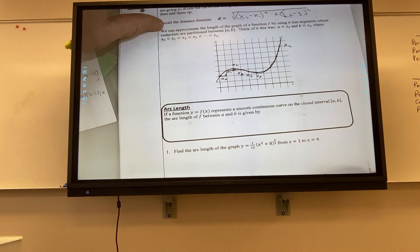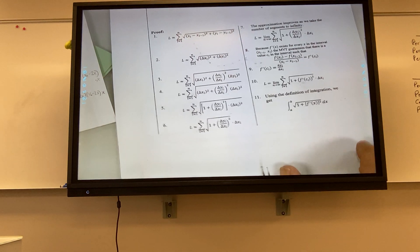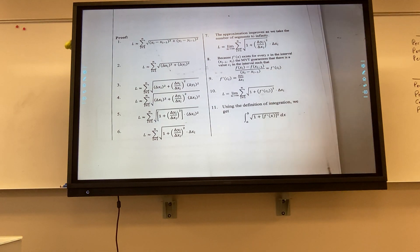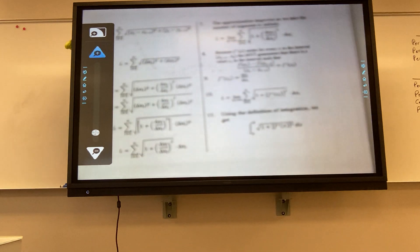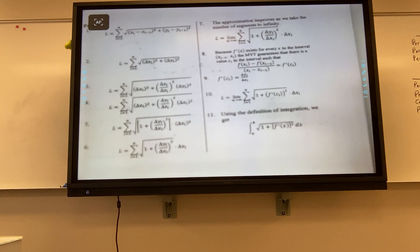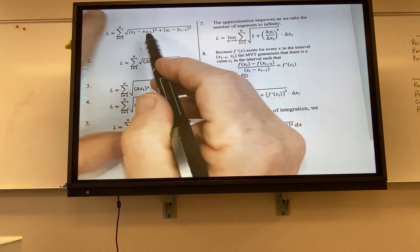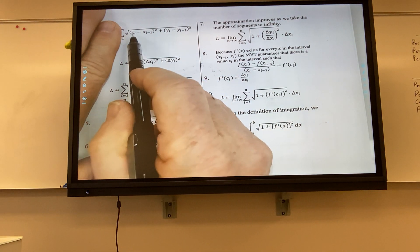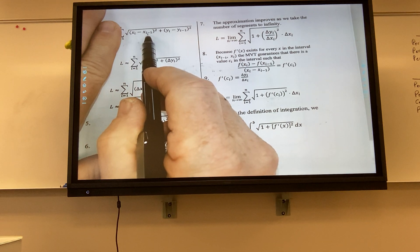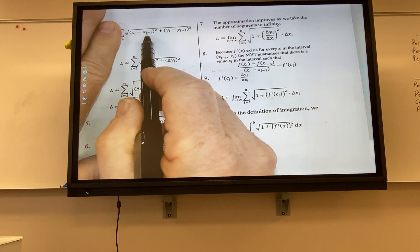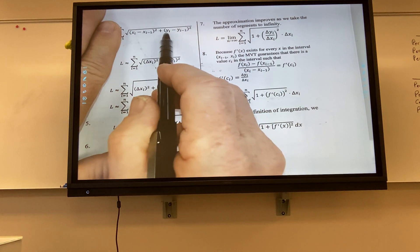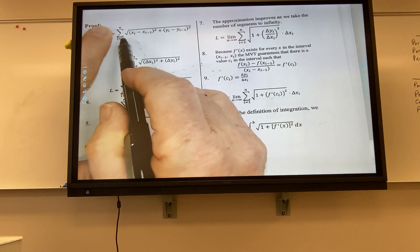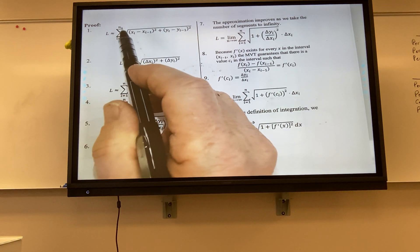All right. Before I go any further, on the back side is the proof. Do you need to know the proof? No, but I kind of want to explain it. All right. So I'm going to make this a tad bigger. And so what's happening here. This right here is the distance formula. So like if this was a 2, this would be a 1. If this was x sub 3, this would be x sub 2. If this was x sub 4, this would be x sub 3. And the same thing with the y's. Is that kind of making sense to everybody? Okay. And so you're adding up all those distances and that will approximate the length. Are we okay? All right.